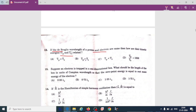Here is the question: The de Broglie wavelength of a proton and electron are the same, then how are their kinetic energies tp and te related? If a proton and electron have the same de Broglie wavelength, the kinetic energy of the electron is higher than that of the proton. So option C is correct here.